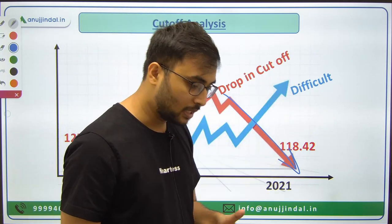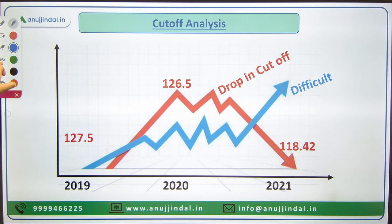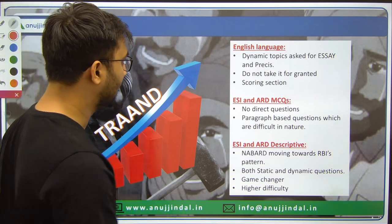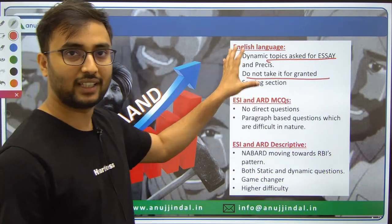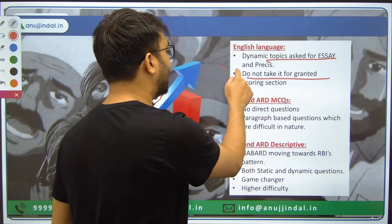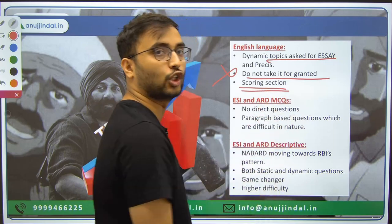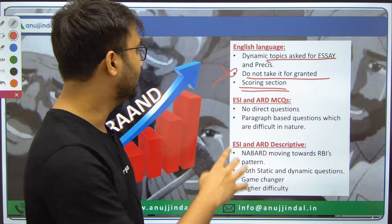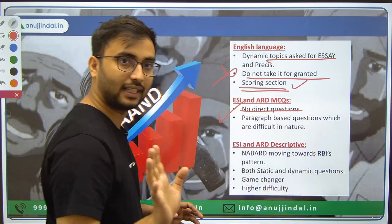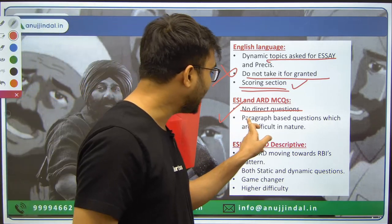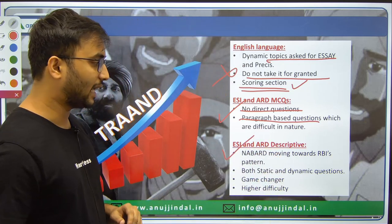Overall takeaways from our Phase 2 trend analysis: For English language, dynamic topics are asked for Essay and Precis — always remember, do not take General English Paper 1 for granted. Practice answer writing for Essay and Precis well. It is a scoring section and a prerequisite for clearing NABARD exam. For ESI and ARD MCQs — no direct single-liner questions like Phase 1; only paragraph-based questions which are difficult in nature, as seen in 2022.